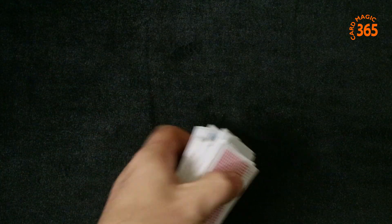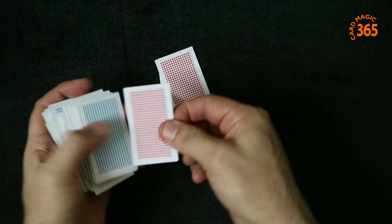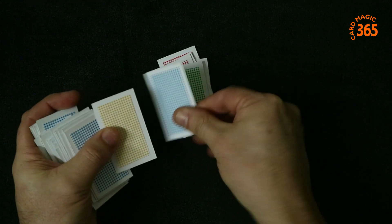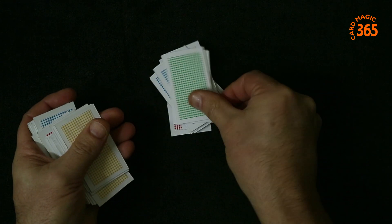They will take the cards, they can cut the cards, and you ask that they deal out 13 cards. One, two, three, four, five, six, seven, eight, nine, ten, eleven, twelve, thirteen.